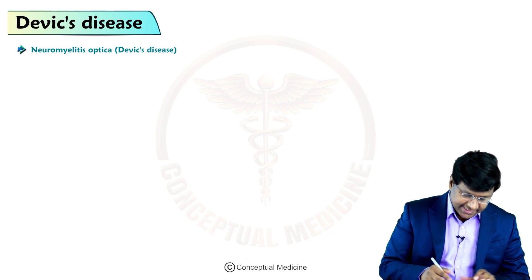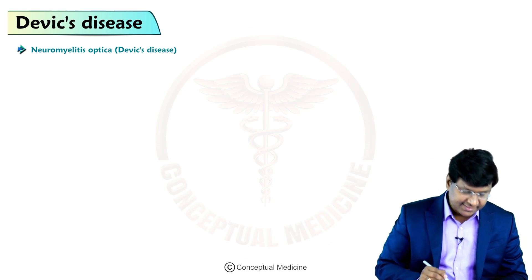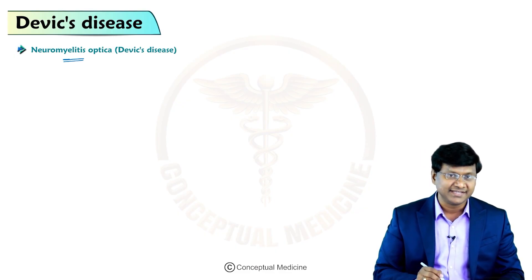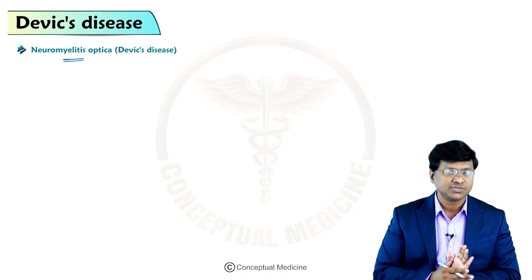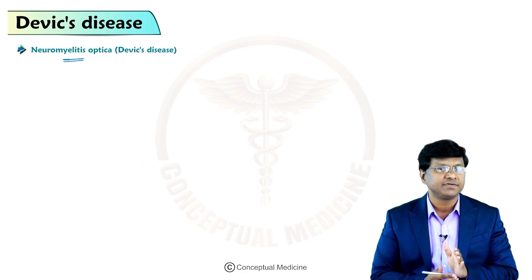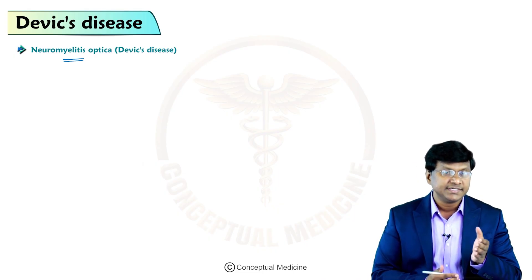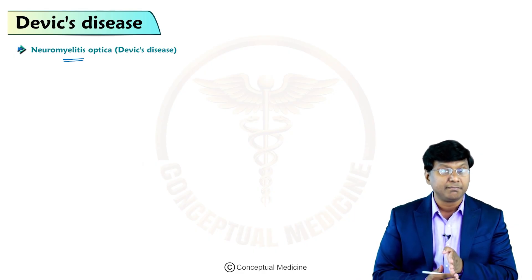What exactly is another name of Devic's disease? That is neuromyelitis optica. This Devic's disease, or neuromyelitis optica, is an idiopathic inflammatory demyelinating disease distinct from multiple sclerosis.